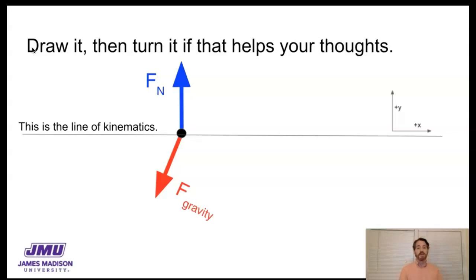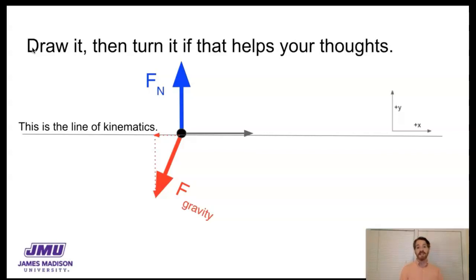You're going to want to break the force of gravity up into its x and y components because you can't add it to anything as-is. We'll break it into a y-component and an x-component using dotted lines. If we add the force of friction in later, that's along the x-axis — I don't have to break that up. Similarly, if there was a rope involved, it's probably going to be along the x-axis. So the only thing I have to break into x and y components is the force of gravity, which I do right away at the beginning of the problem.